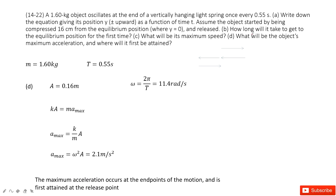The next part asks for the maximum acceleration. In simple harmonic motion, maximum acceleration occurs at the ends. The net force is the elastic force kx, and at the endpoint it becomes kA. By Newton's second law, kA equals m times acceleration, so when displacement is maximum A, acceleration is also maximum. Maximum acceleration equals k over m times A, which equals omega squared times A. We input omega and amplitude to get the final answer.